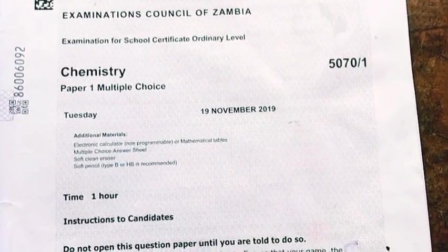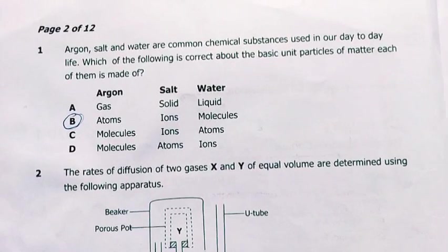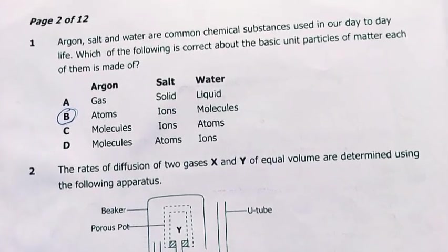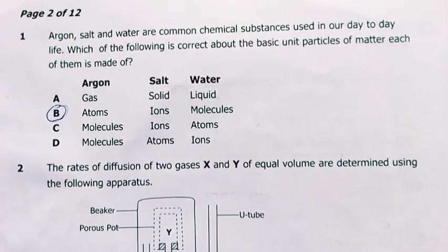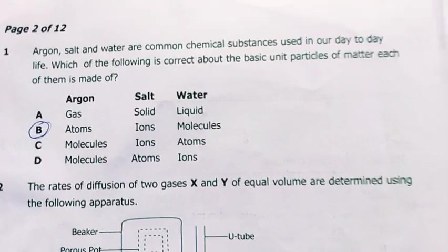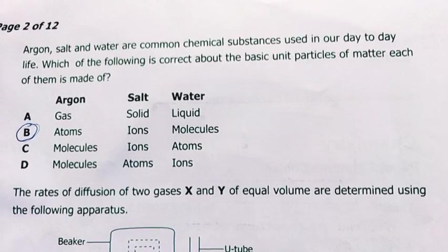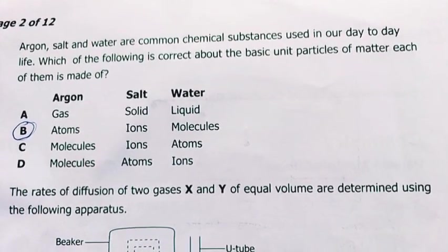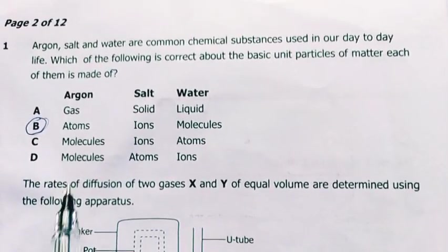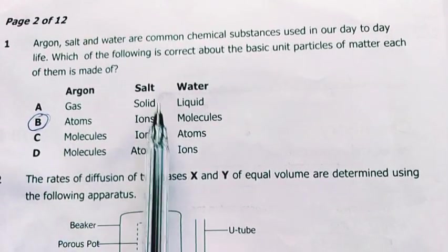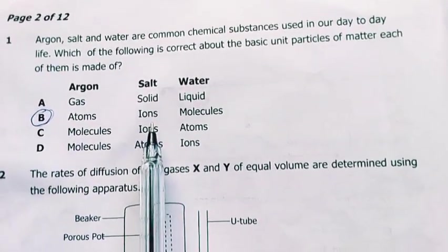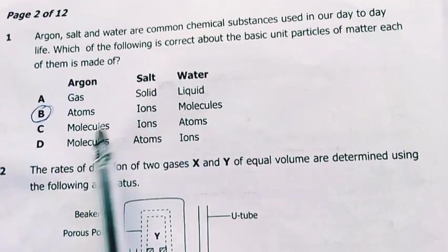Let's get to question 1. Argon, salt, and water are common chemical substances used in our day-to-day life. Which of the following is correct about the basic unit particles of matter each of them is made of? Argon is made of atoms because it's a noble gas, salt is ionic because it's an ionic compound, then water is made of molecules. My answer is B.